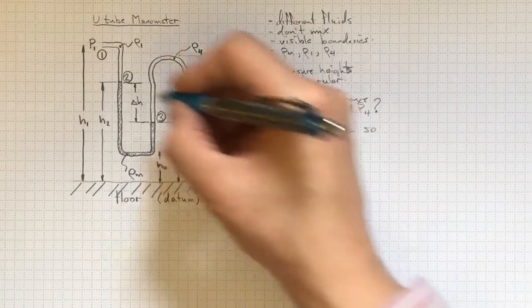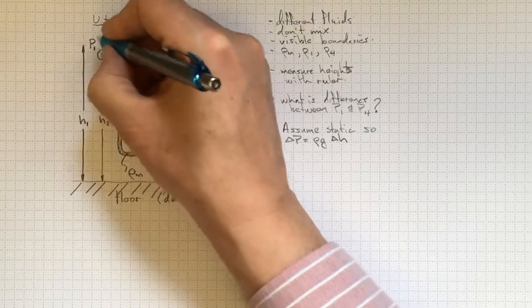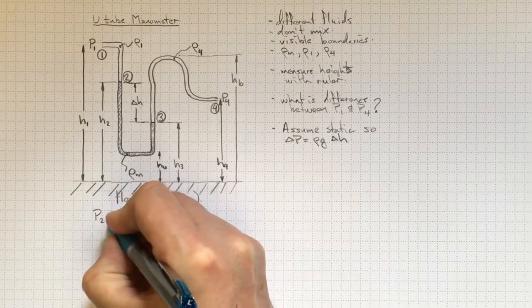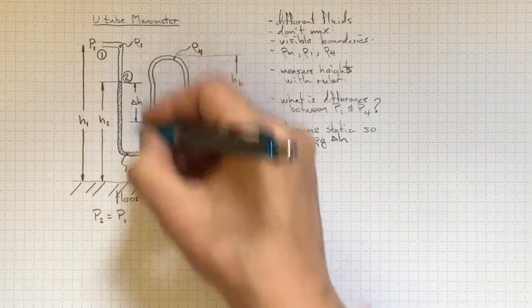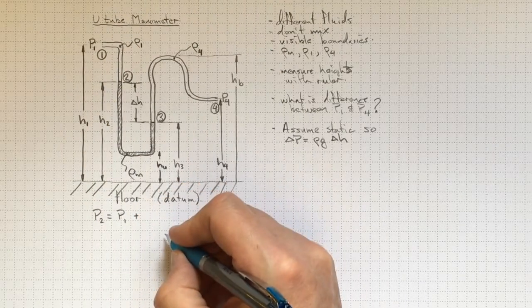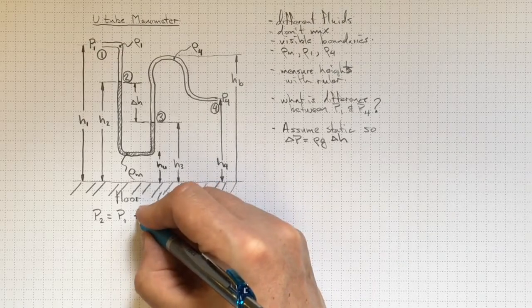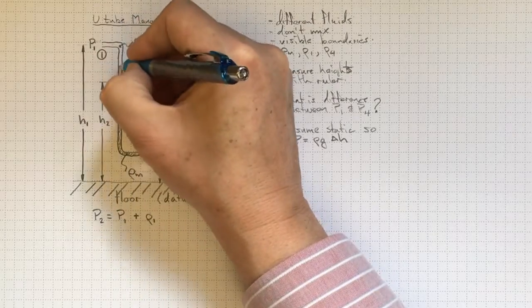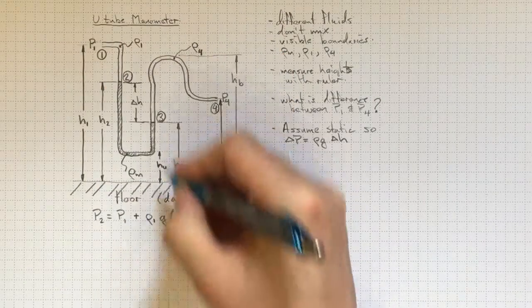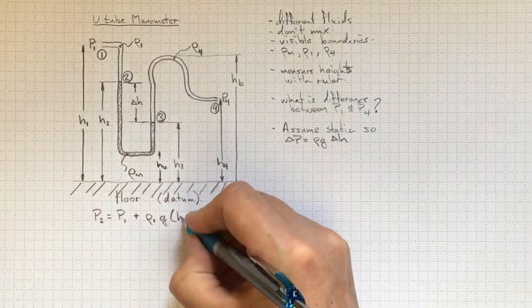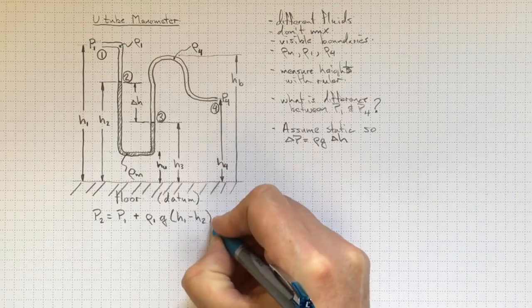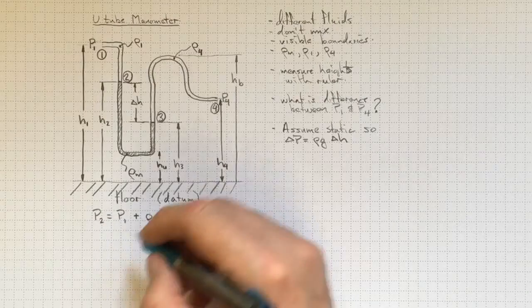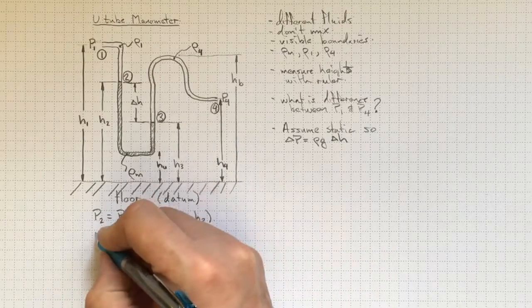Having made that assumption, we can figure out the pressure at two in terms of the pressure at one. So P2 will be equal to P1, and because it's lower in elevation, the pressure will go up. So it'll be a positive sign there, plus the density of fluid one, which is what's in the tube right here, times gravity, times the height at one minus the height at two. So we're making that all positive values, and we'll see an increase in the pressure from one to two.